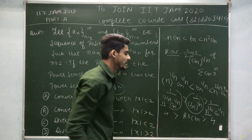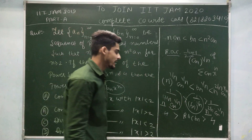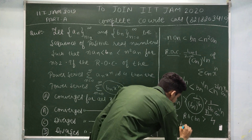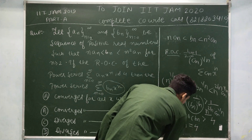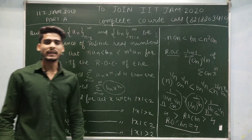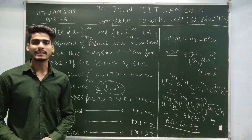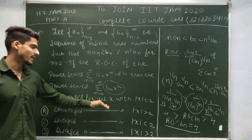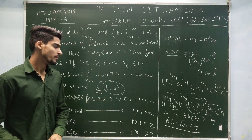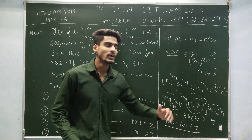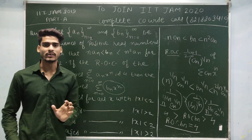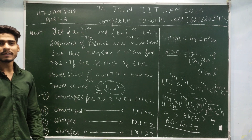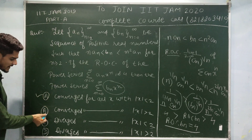This means 4 ≥ ROC of bₙ ≥ 4, which means the ROC of bₙ is exactly 4. Because we are given that the ROC of summation aₙ·xⁿ is 4. So the radius of convergence of the bₙ power series is also 4.